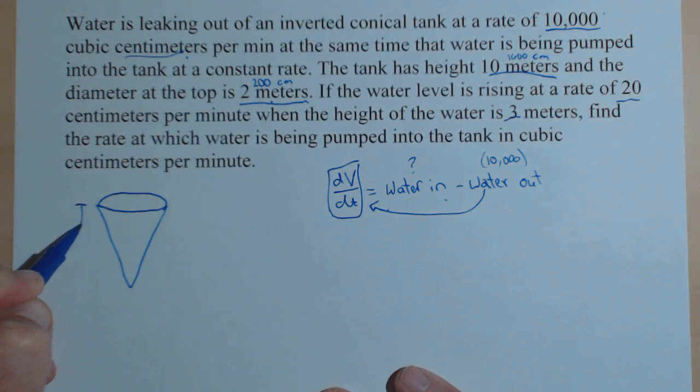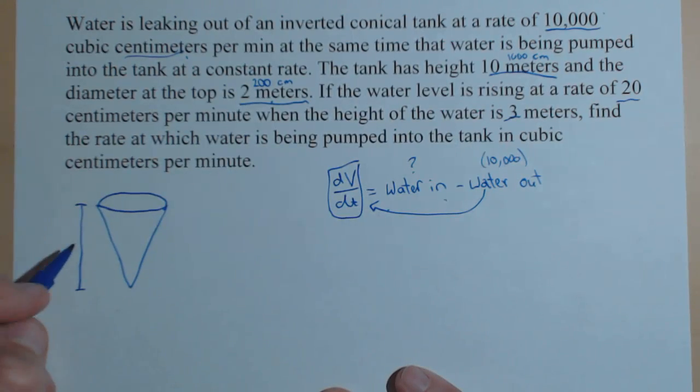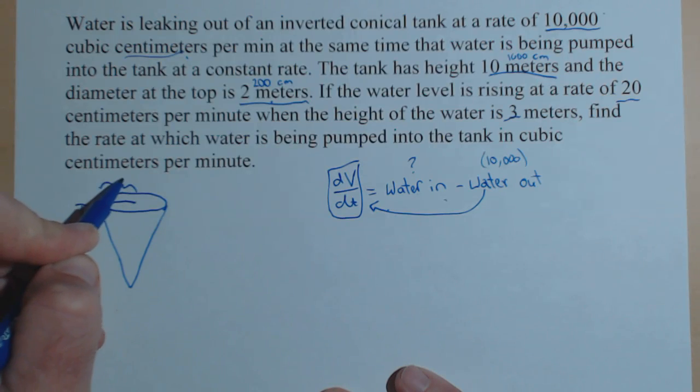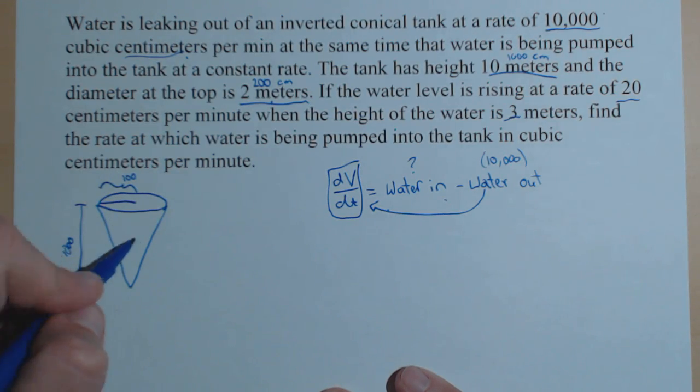Now, I know the height of the cone is 1,000 cm. And the diameter is 200, so let's just use the radius of 100. Because when we go to use the volume, look at the volume of the water, we'll probably just use the radius.